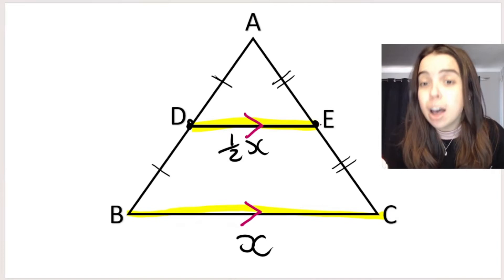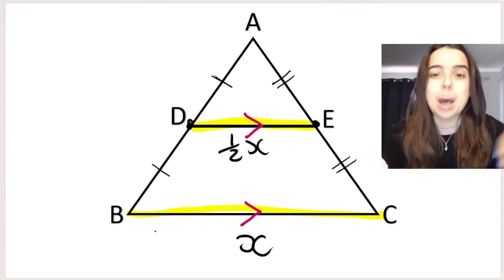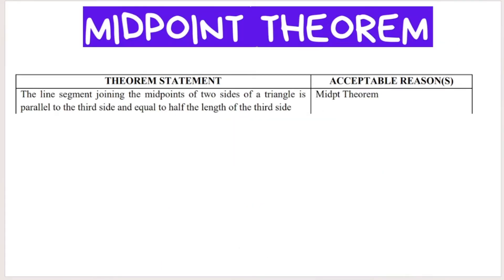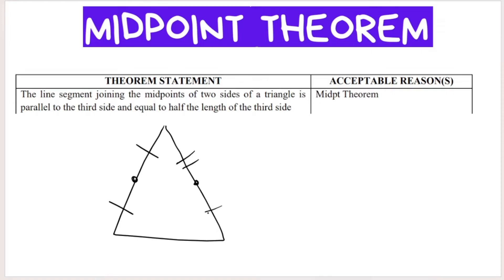Let's say DE was 5 centimeters long — BC would be double that, so 10 centimeters. So I hope that makes sense. What I've just shown you is what we call the midpoint theorem. To go over it again: if I have a triangle and I give you the midpoint of one side and the midpoint of a second side, the line that joins those two midpoints will be parallel to the third side, and this joining line is half the length of the third side. That is the midpoint theorem.